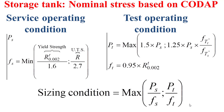For the hydraulic test operating condition, we have another pressure Pt, determined as the maximum between 1.5 PS and 1.25 PS multiplied by the nominal stress at the test temperature divided by the nominal stress at the service temperature. The nominal stress for the test condition is calculated as 0.95 multiplied by the yield strength at the temperature of the test. We calculate the useful thickness for both the service and hydraulic test conditions and choose the higher value. Practically, the sizing condition is determined based on the maximum between PS divided by FS and PT divided by FT.